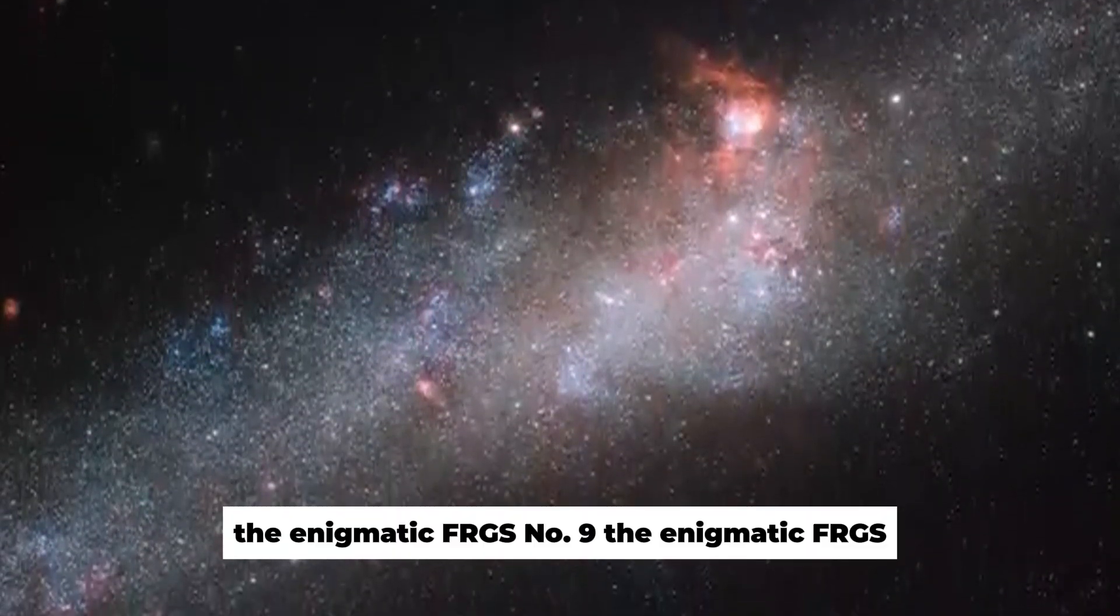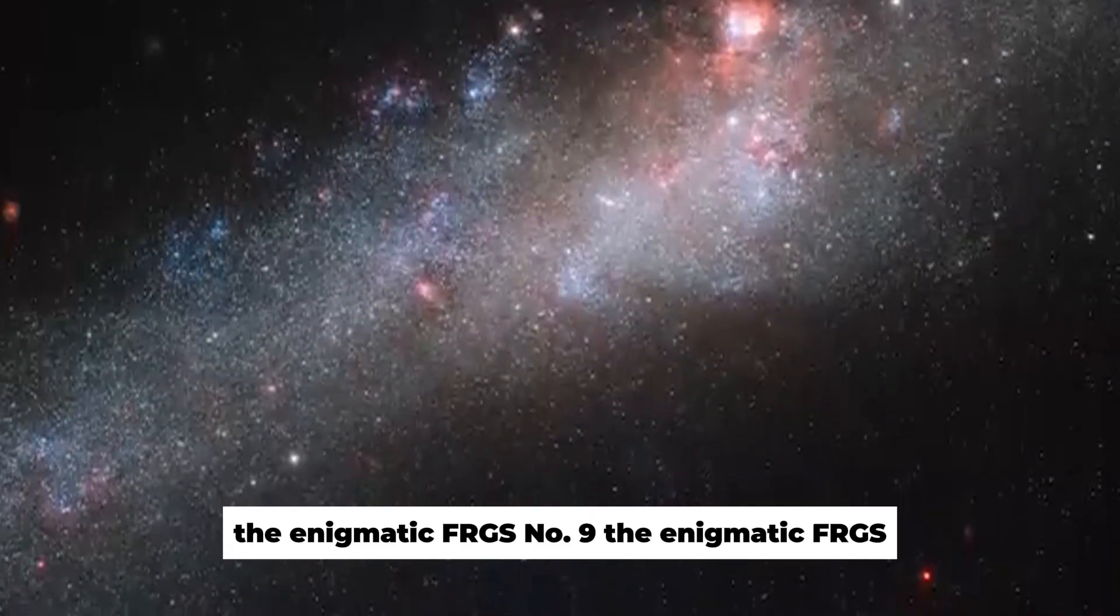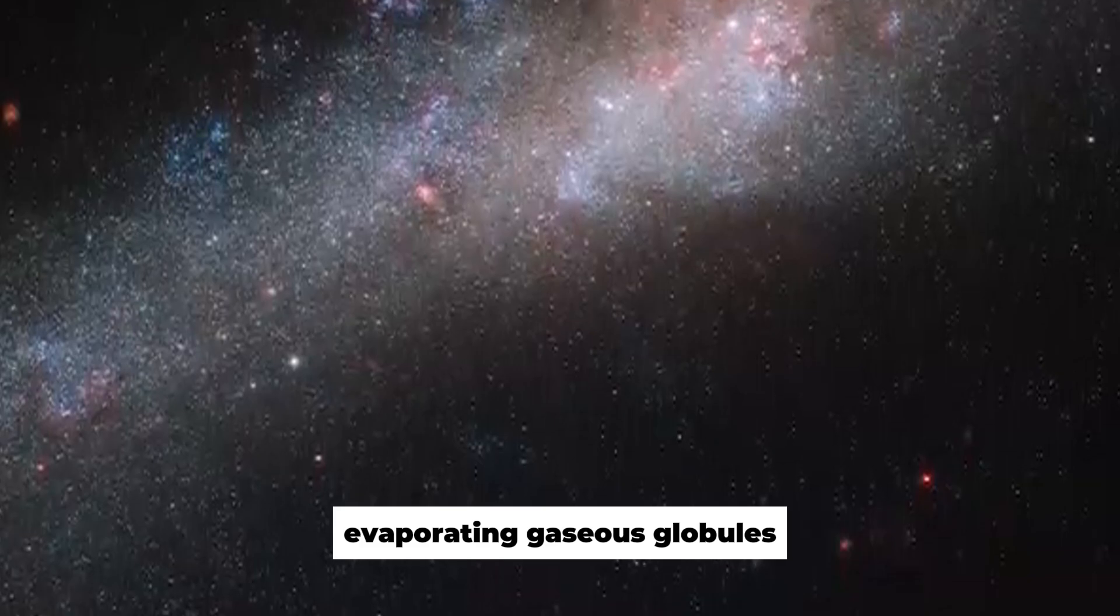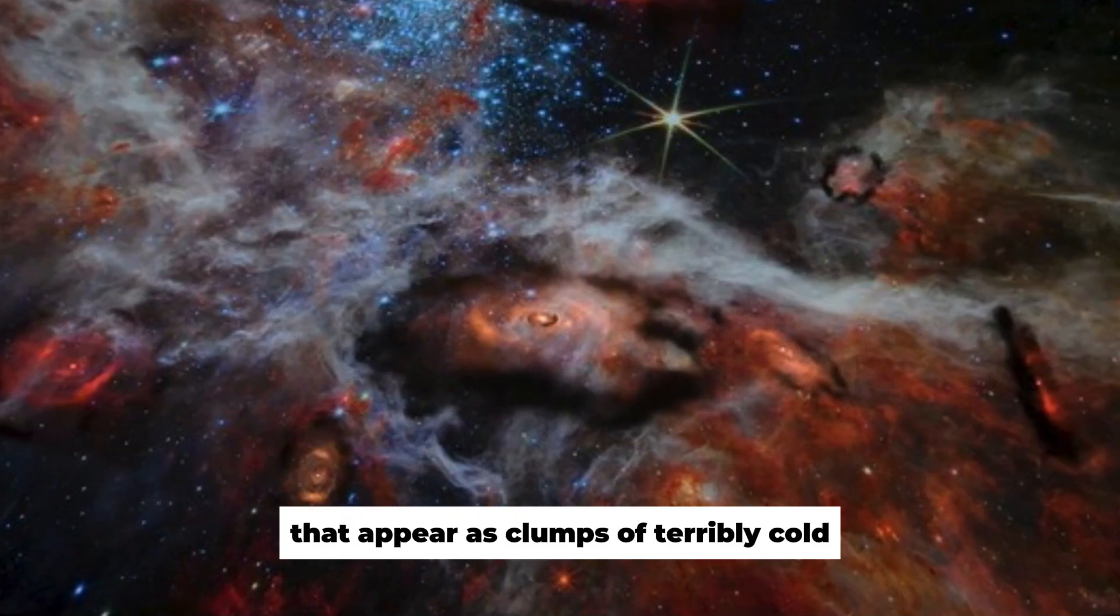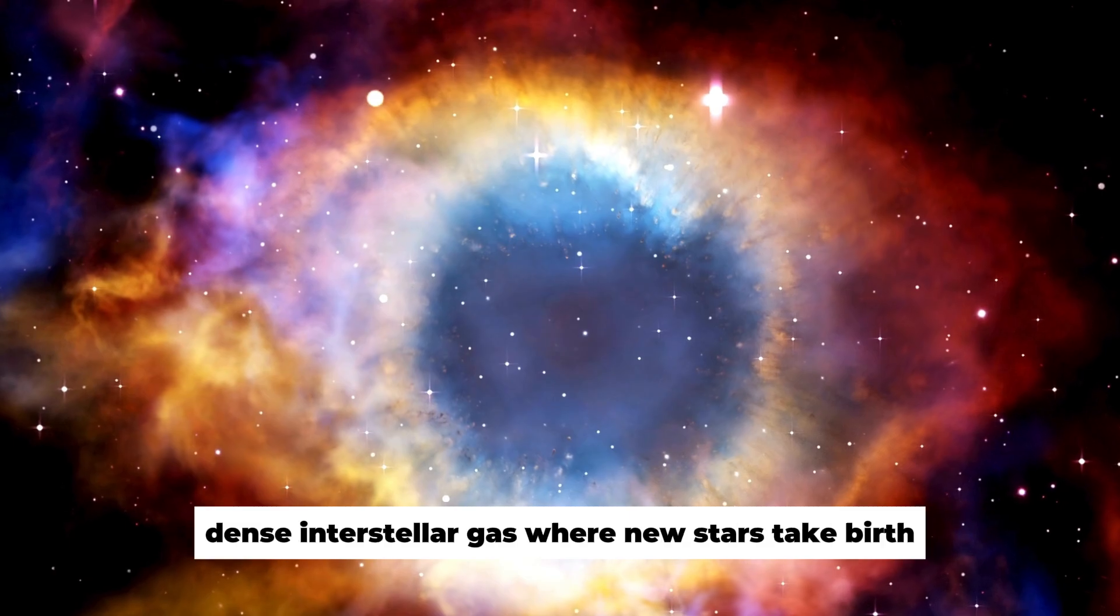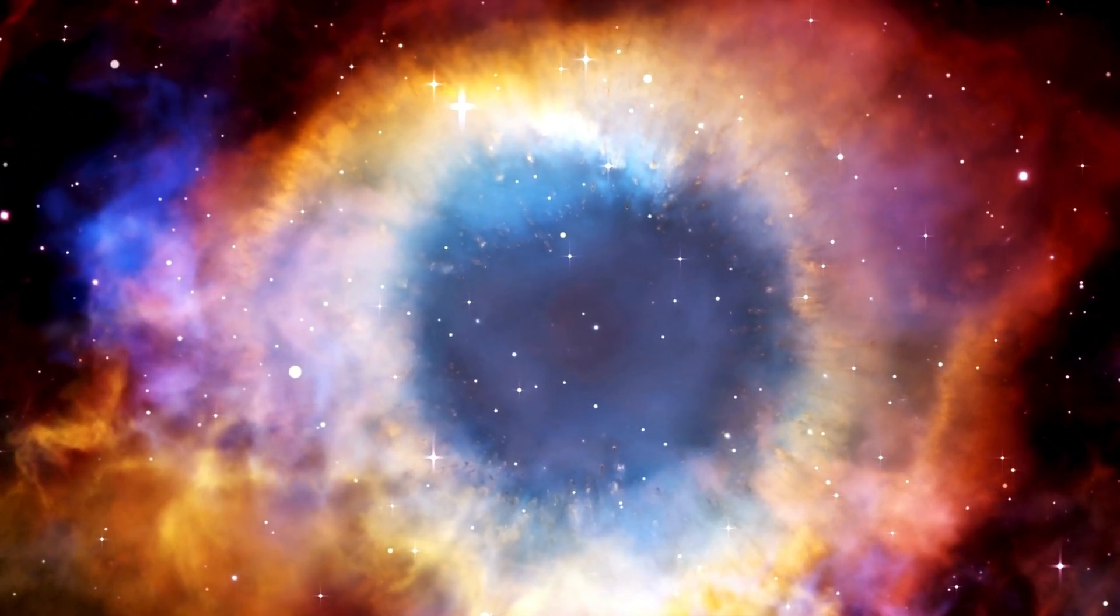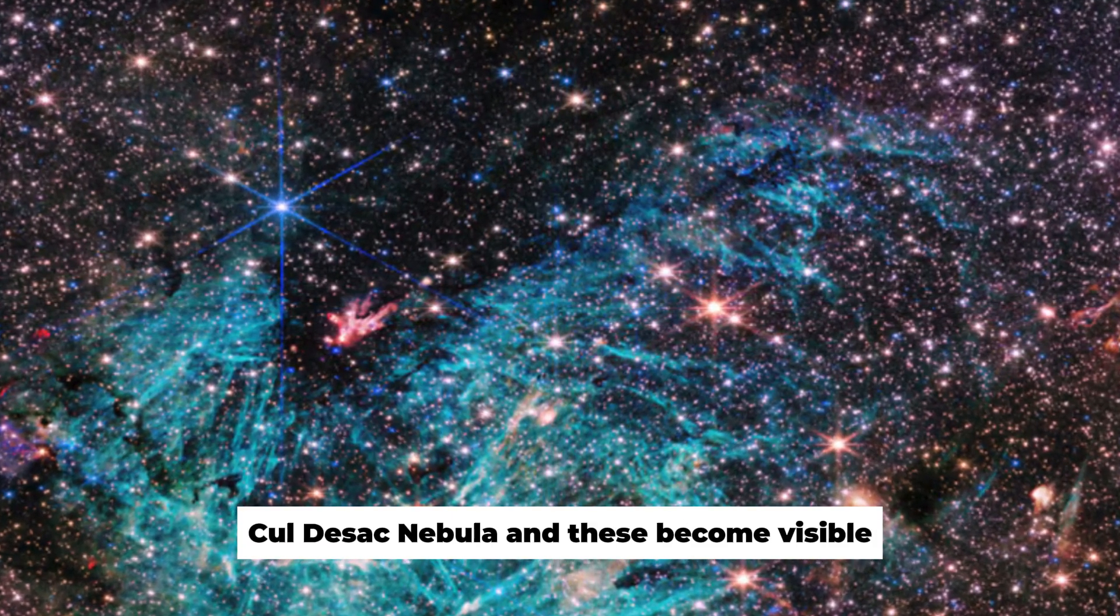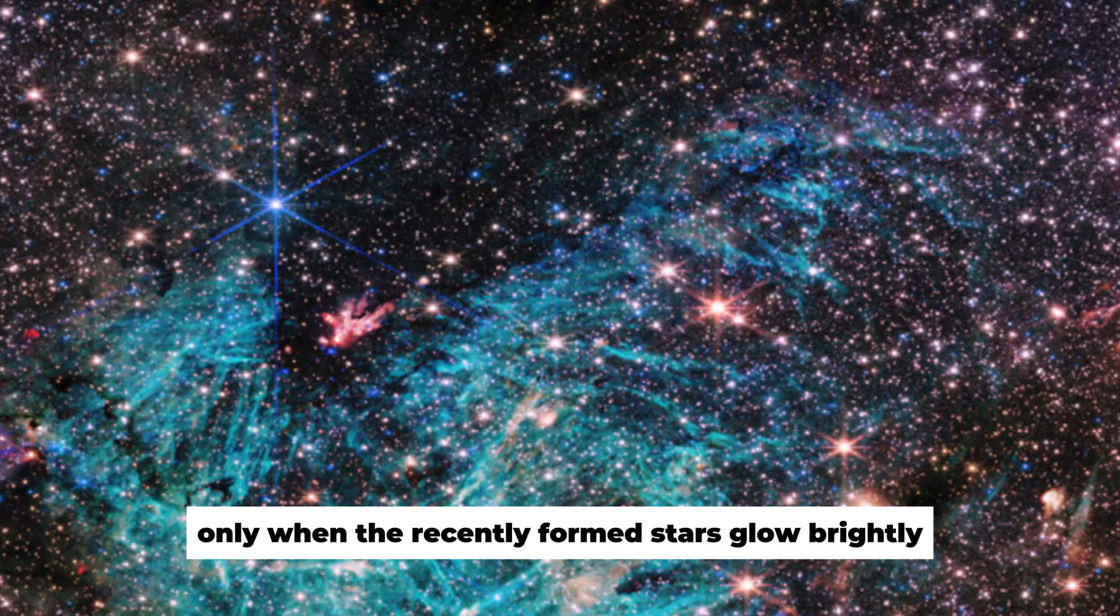Number 9: The Enigmatic FRGs. This picture presents to you the free-floating, evaporating gaseous globules, also known as FRGs, that appear as clumps of terribly cold, dense interstellar gas where new stars take birth. The FRGs are basically situated in the northern cul-de-sac nebula, and these become visible only when the recently formed stars glow brightly.